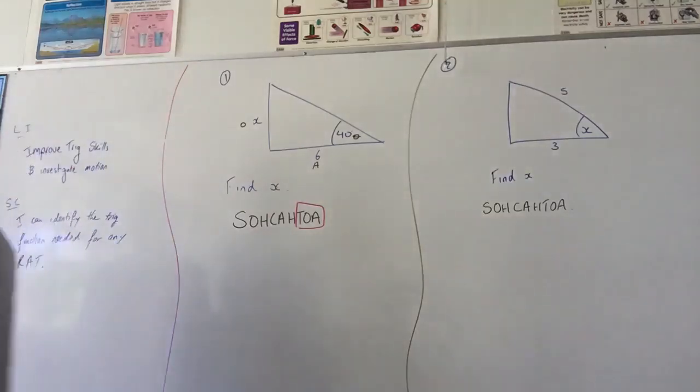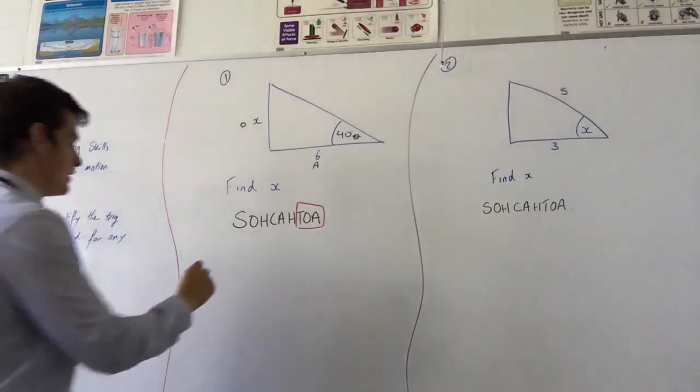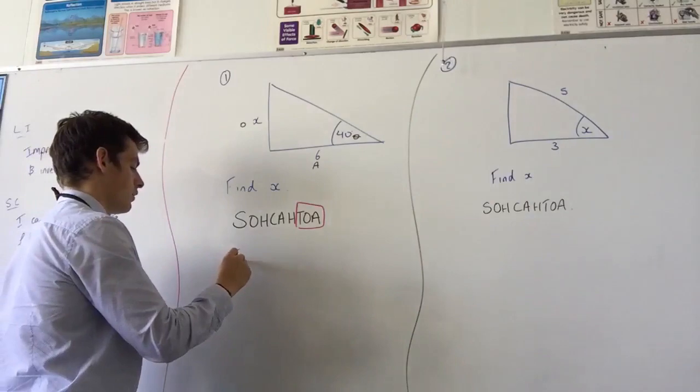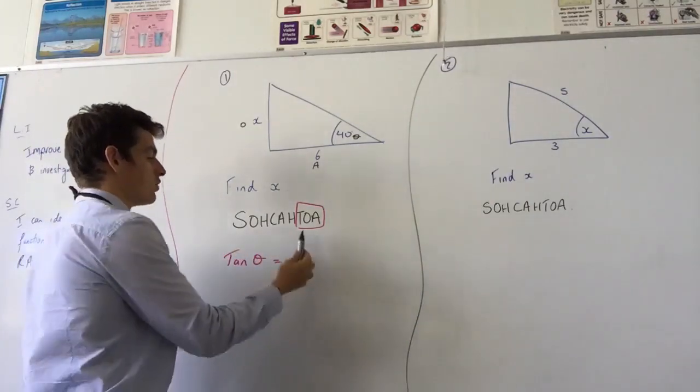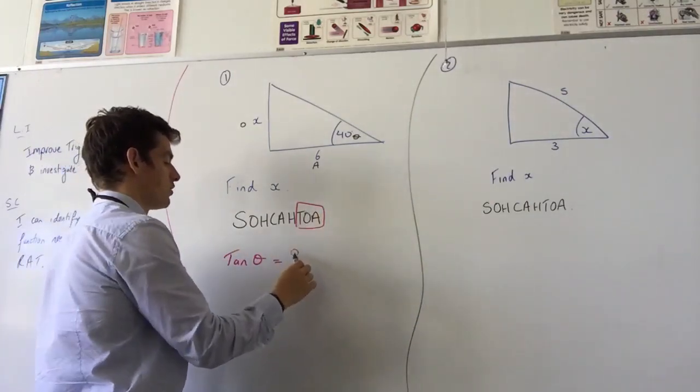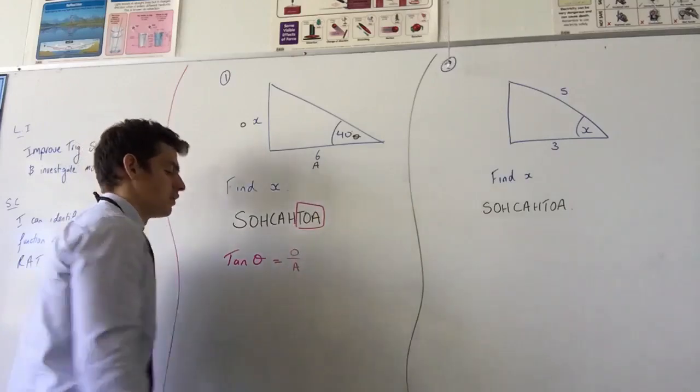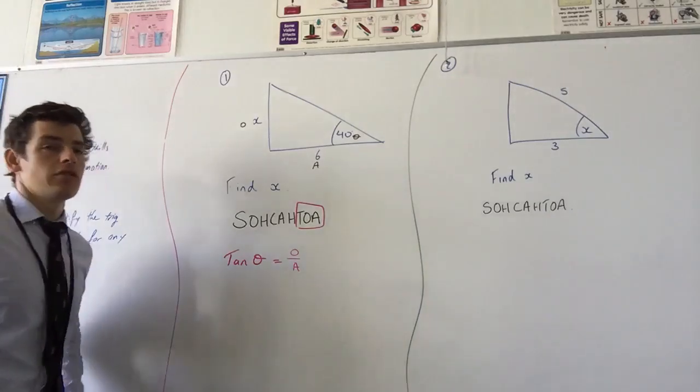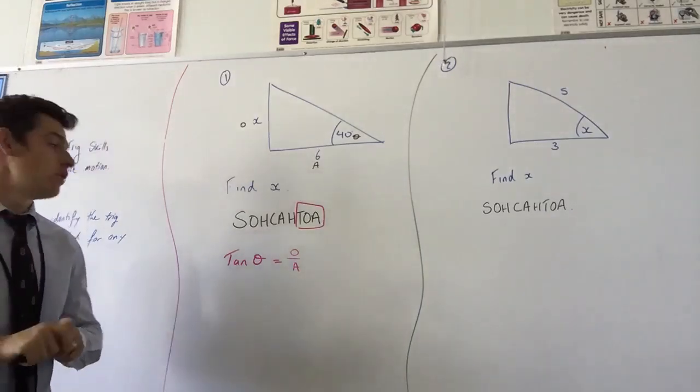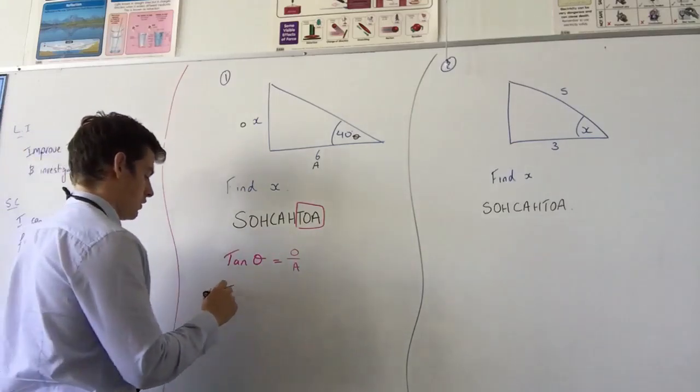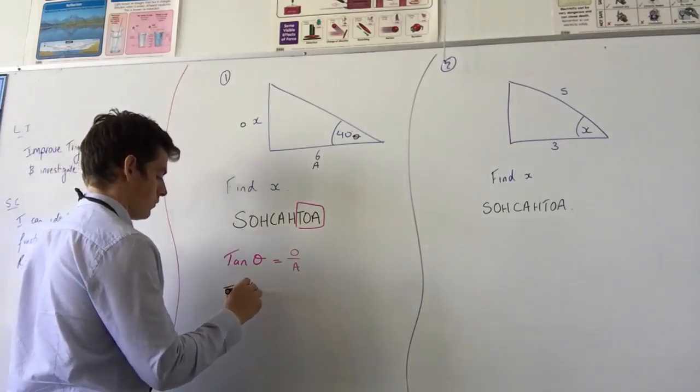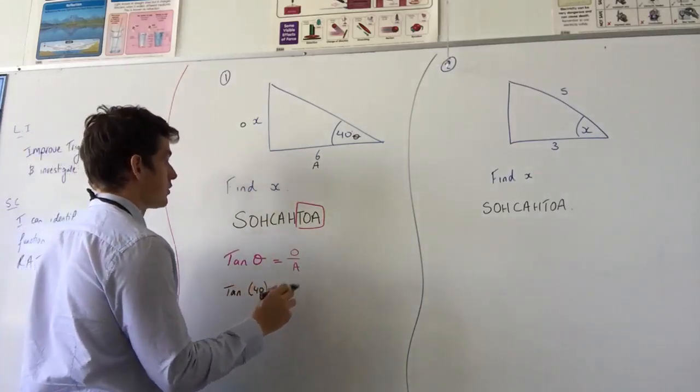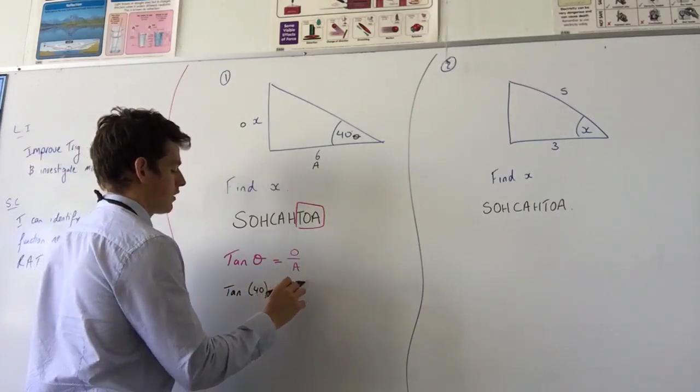Which tells me the first line of my working should be tan theta equals, and because opposite goes first, it's opposite over adjacent. Now all I need to do is sub my known values in. What's my value for theta? 40. Opposite, do I know it? X over?